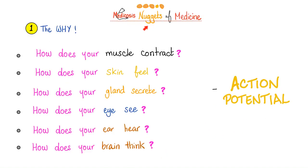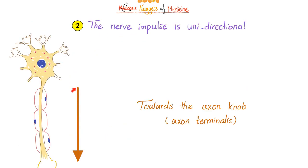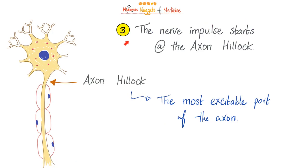Four nuggets from the previous video. Nugget one: why do we need action potentials? Because everything in your body is an action potential — life is action potential. Nugget two: the nerve impulse is unidirectional inside the body. Antidromic conduction exists experimentally outside the body, but inside your body impulses only go one way. Nugget three: the nerve impulse starts not in the soma but in the axon hillock — the most excitable part of the axon.